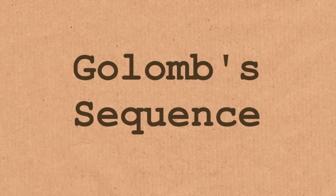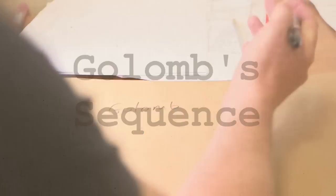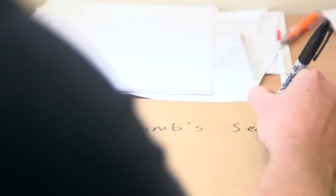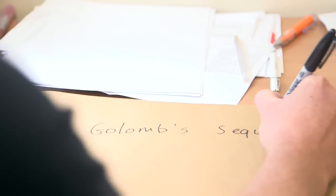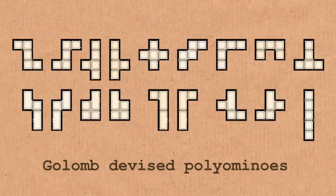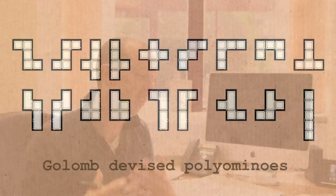Next up is Golomb's sequence. Golomb — like Lord of the Rings? Well, this guy has an amazing name: Solomon Golomb. He's actually quite an interesting person — a mathematician who invented pentominoes, a mathematical game that was the forerunner of Tetris. So Solomon Golomb essentially invented Tetris. What is his sequence?